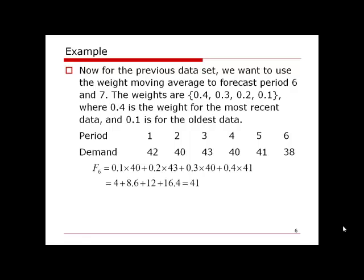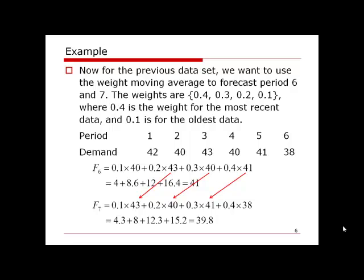Next, we calculate the demand forecast for period seven after receiving the period six demand. As before, period two data is removed since it is no longer within the most recent four periods. We now use demand from period three to period six. As we drop the oldest data and add the most recent, the weights shift: period six now has the highest weight of 0.4, and the weights for the remaining periods shift down by one position accordingly.